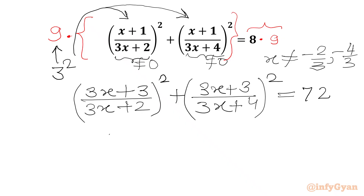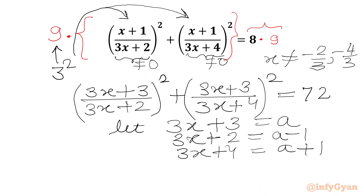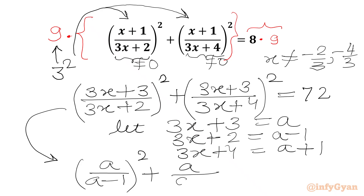Now if we consider 3x plus 3 equal to a, then we can write our denominators: 3x plus 2 is a minus 1, and 3x plus 4 is a plus 1. So our equation in a would be: a over (a minus 1) whole squared, plus a over (a plus 1) whole squared, equal to 72.